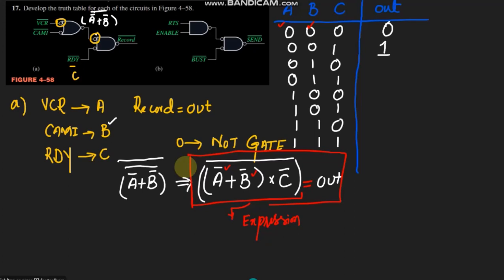When a=0 and b=1: a' = 1, b' = 0, so 1+0 = 1, multiplied by c'. When c=0, c' = 1, so 1×1 = 1 and the whole complement is 0 here. Similarly when c=1, 1 complement is 0, so 0 will make all of this equal to 0 and the whole complement will be 1 here.